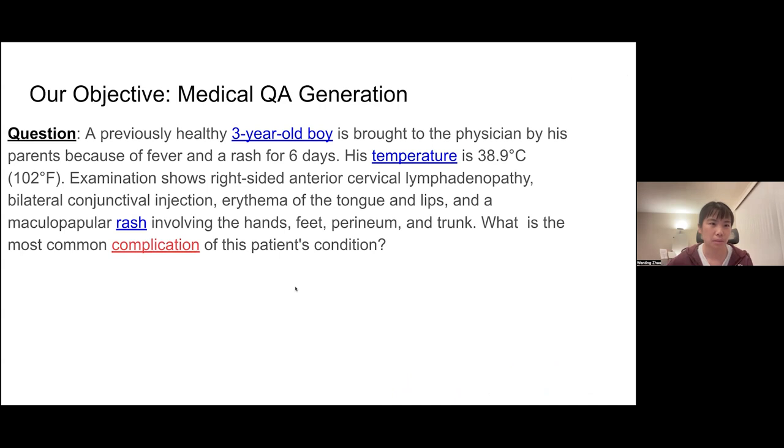Here is an example. This question describes the symptom for a three-year-old boy brought to the physician by his parents because of fever and a rash for six days. His temperature is 68 Celsius. Examination shows red-sided anterior cervical lymphadenopathy and the rest of the symptoms. The goal is to generate a short answer to describe what's the most common complication of this patient's condition. The ground-truth answer contains six to seven words: blocking antibody attack on the old antigen.